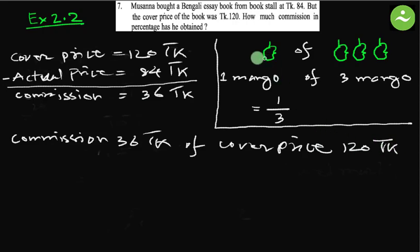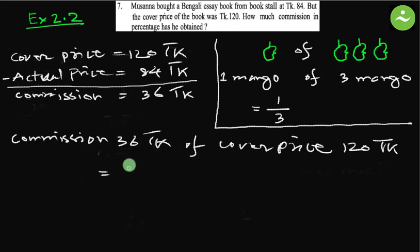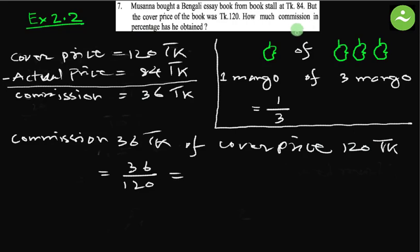Just like one mango of three mango means one by three, similarly commission 36 taka of cover price 120 taka will be 36 by 120. Now they said we have to find out the commission in percentage, so if we express this fraction as a percentage we follow the method of multiplying by 100.